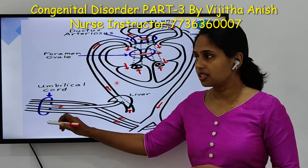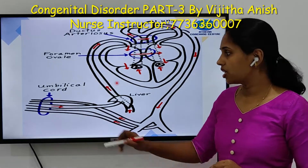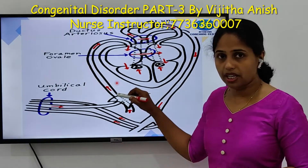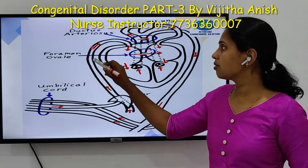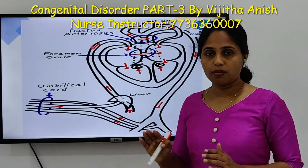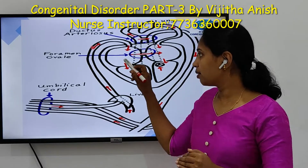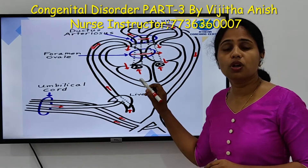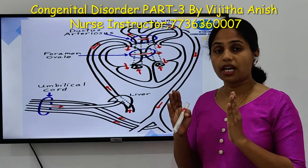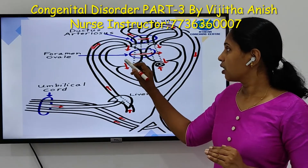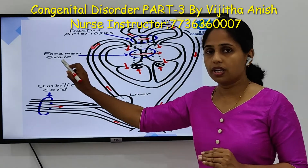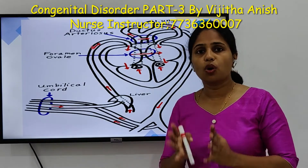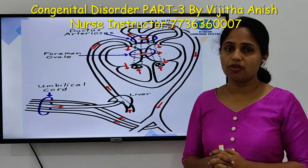In fetal circulation, oxygenation starts in the placenta with the help of the umbilical cord. The umbilical vein carries oxygenated blood to the fetus, connecting to the inferior vena cava. From there the blood moves to the right atrium. In normal adult circulation, blood from the right atrium goes to the right ventricle. But in fetal circulation, only a small amount of blood moves into the right ventricle.